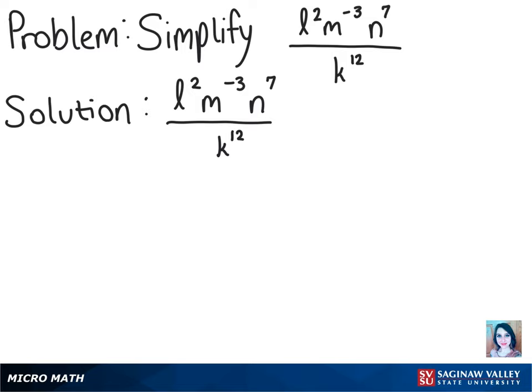To simplify this problem, we know that negative exponents and their bases, when negative, belong in the denominator — or if they're in the denominator, they belong in the numerator. So they basically just get flipped.